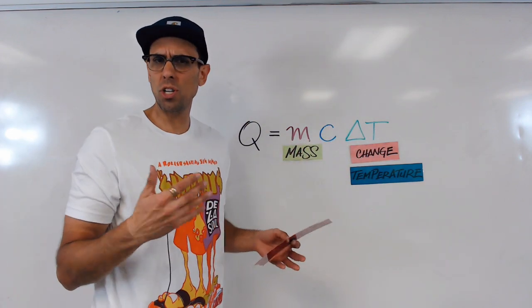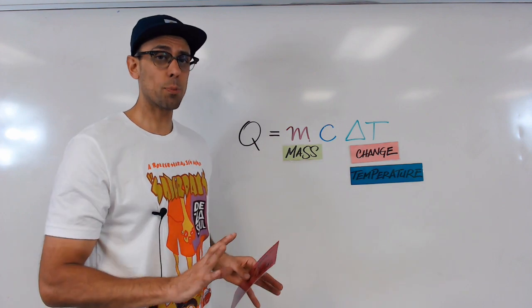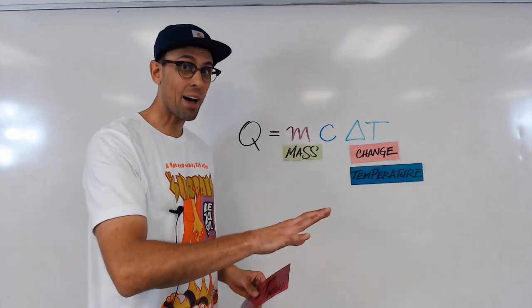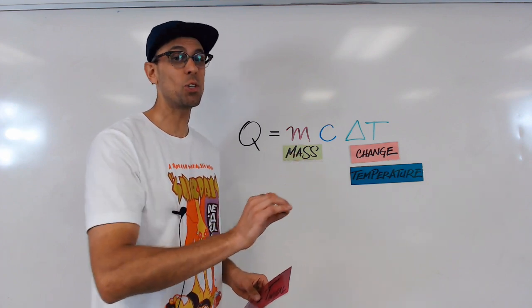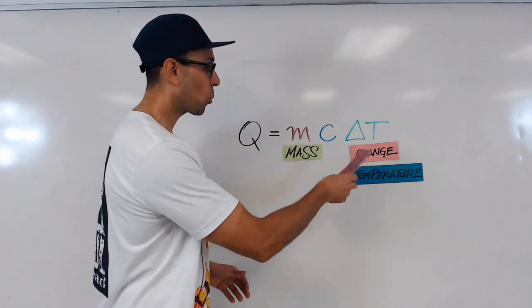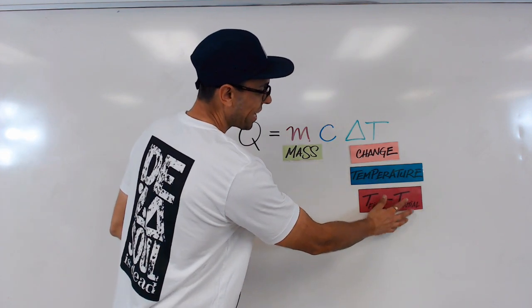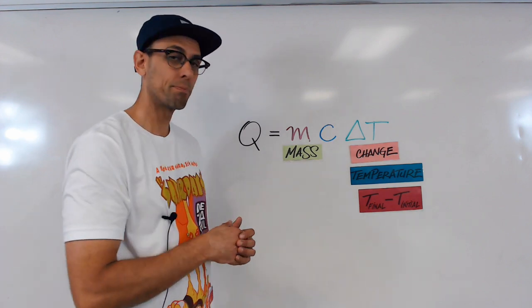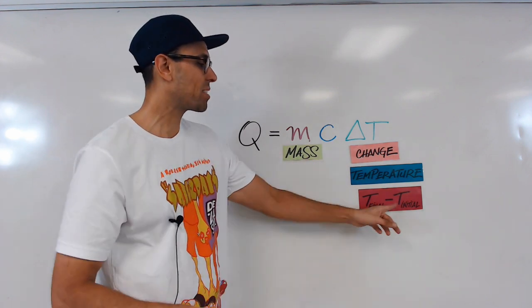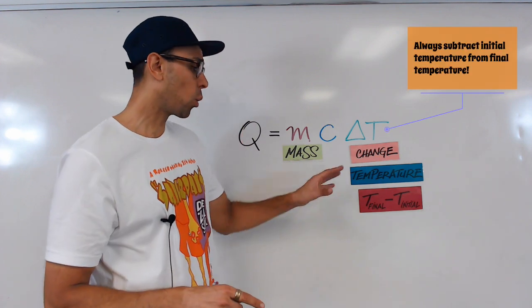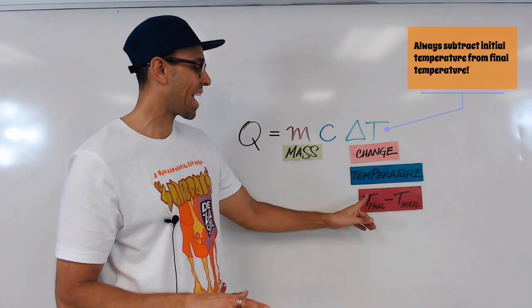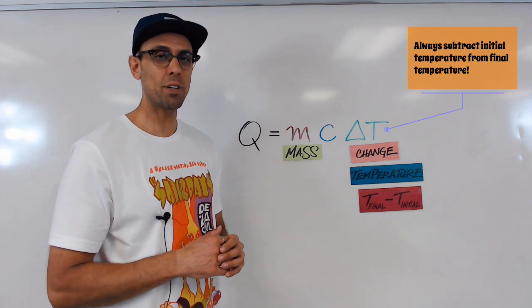But what do they mean by change in temperature? Well, when we're solving these sorts of problems, we're going to have a substance or a material and it's going to start out at one temperature, that's its initial temperature, and it's going to end up at a different temperature, which is the final temperature. So we calculate the delta T by taking our final temperature, whatever value that might be in degrees Celsius, and from that number we subtract the initial temperature. Now be careful, the order is really important. Delta T has to be calculated as temperature final minus temperature initial.